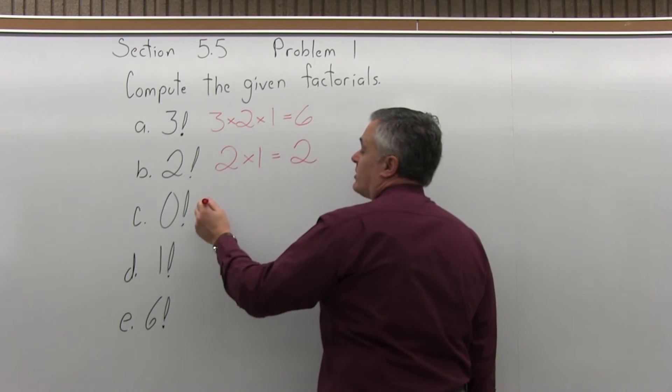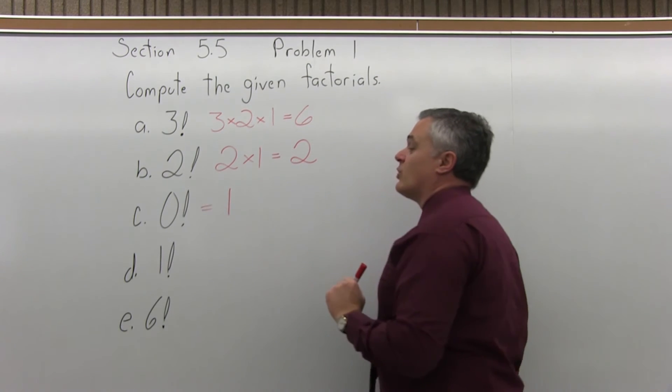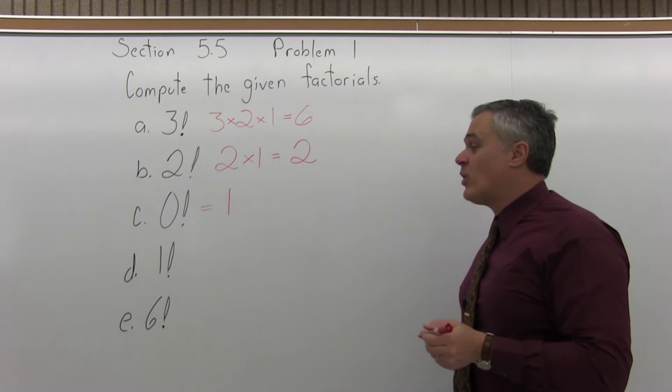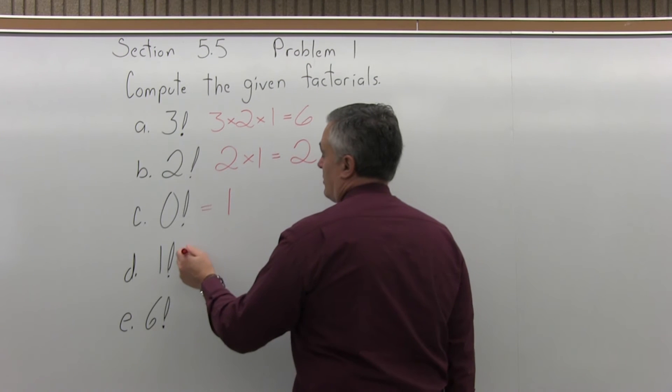Now 0 factorial, by definition, is 1. And then 1 factorial is also 1.